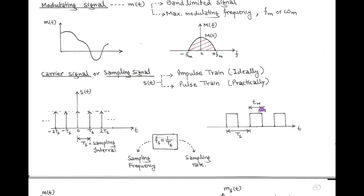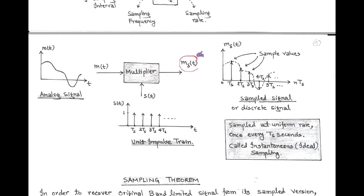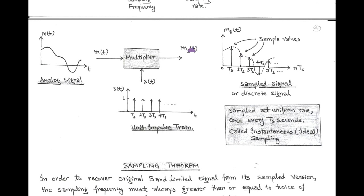The sampling signal has sampling frequency fs = 1/Ts, which is called the sampling rate. Now in the sampling process, both the analog signal m(t) and the periodic unit impulse train s(t) are passed through the multiplier. And at the output of the multiplier, we get the sampled signal or discrete signal denoted by m_delta(t). Here, the analog signal m(t) is sampled at a uniform rate at every Ts seconds — called the sampling period. Since unit impulse train is used as the sampling signal, the process is called ideal or instantaneous sampling.